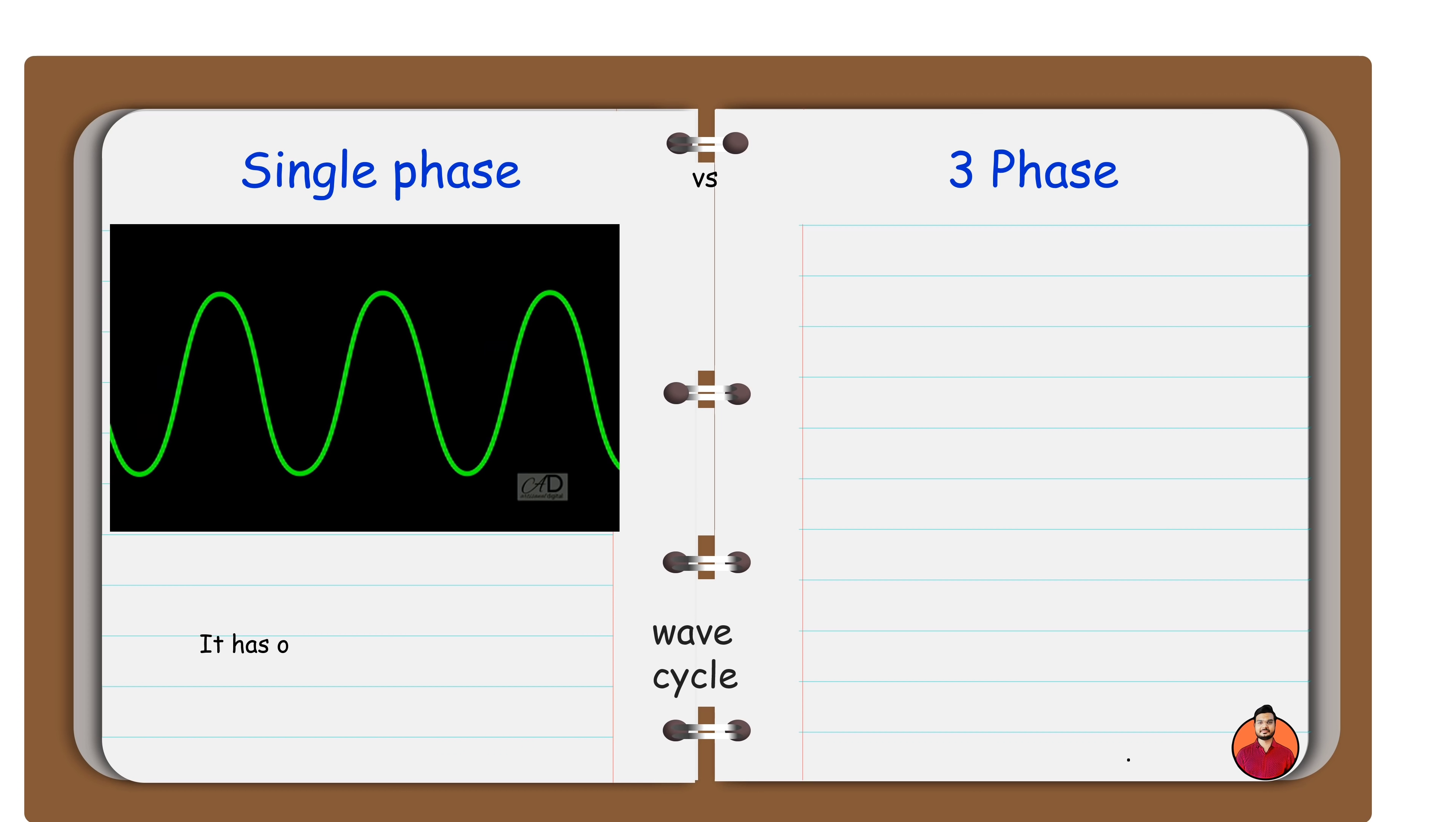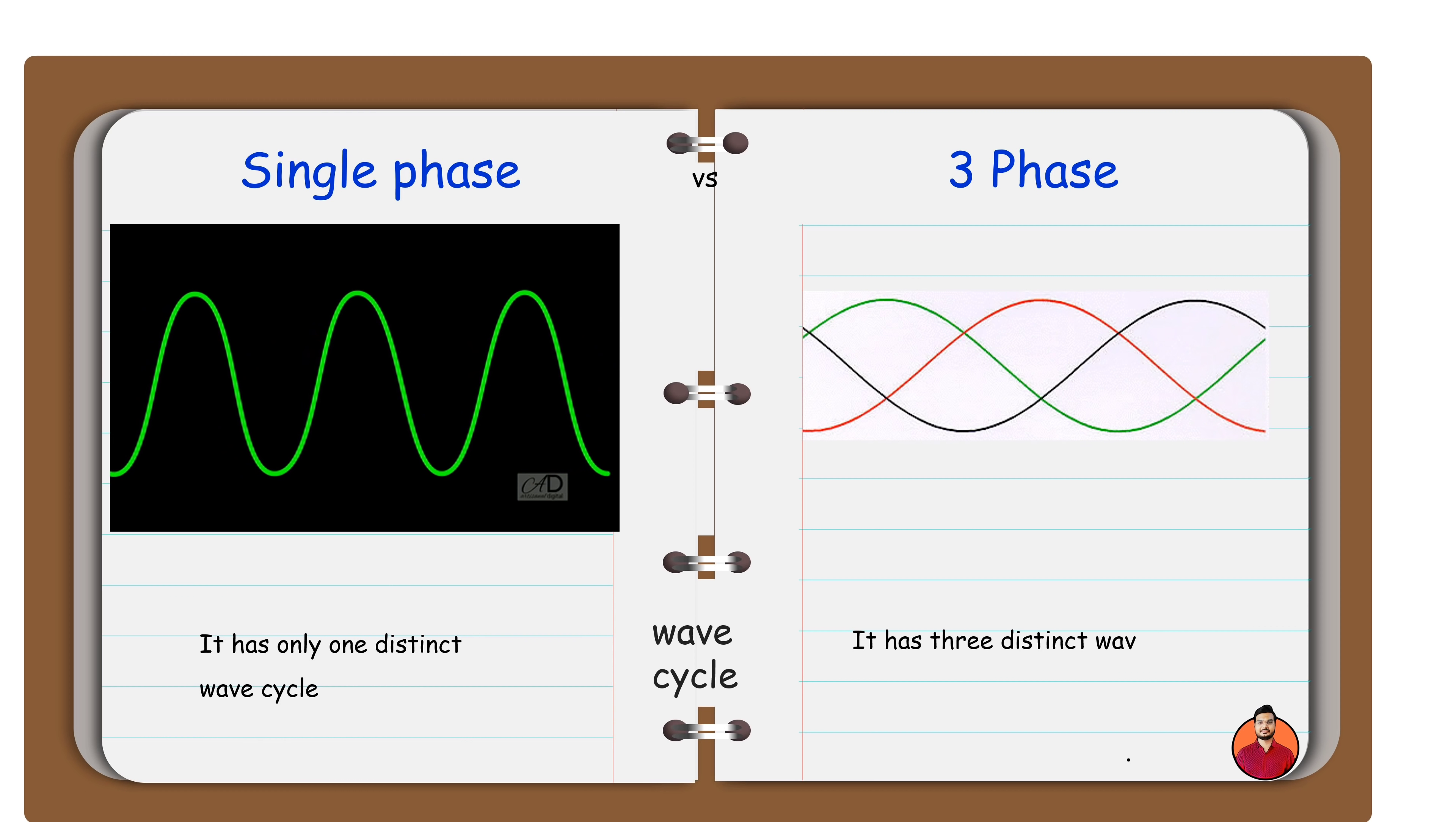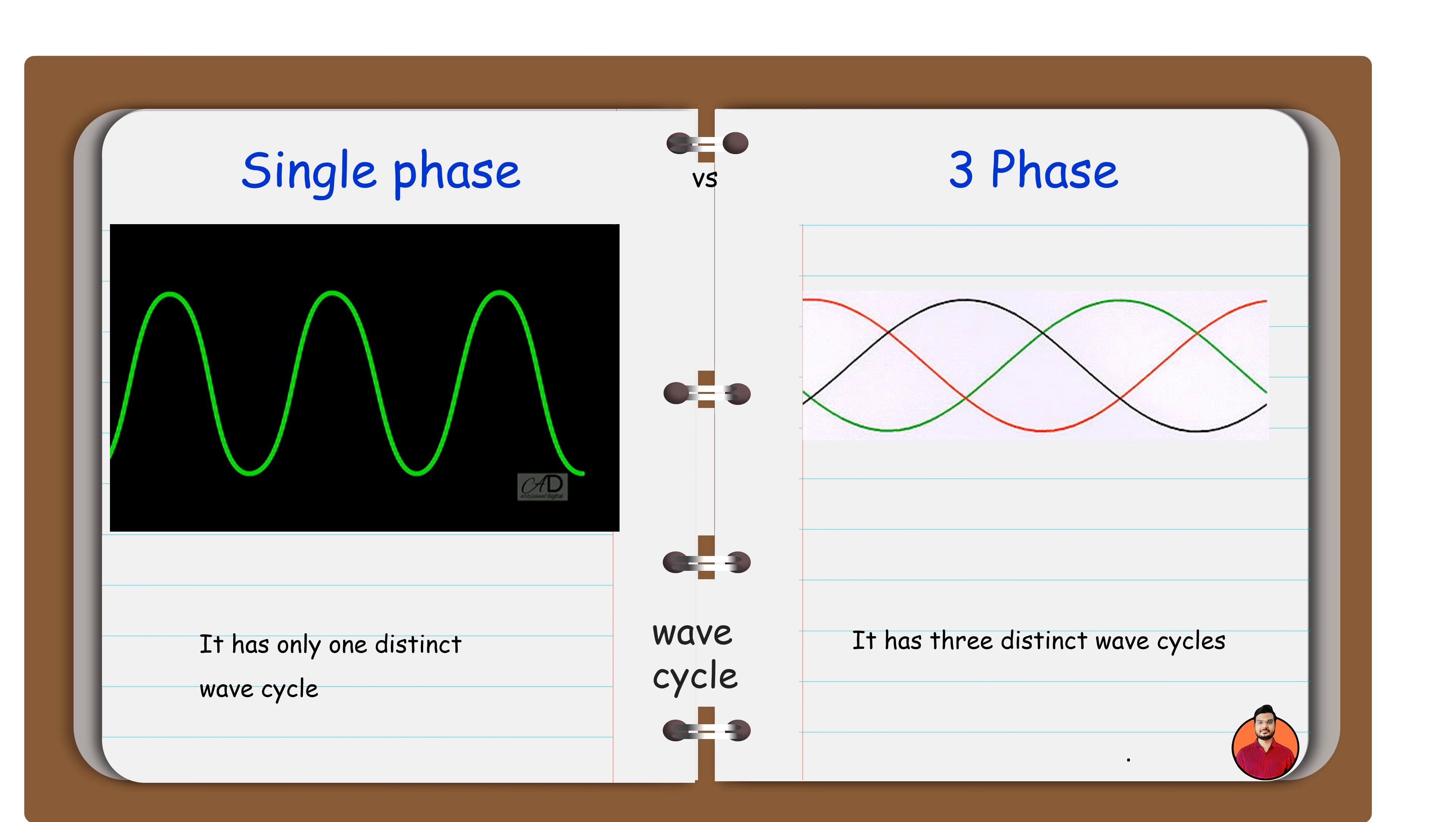A single-phase has only one distinct wave cycle, as shown above. Three-phase has three distinct wave cycles, as shown above.